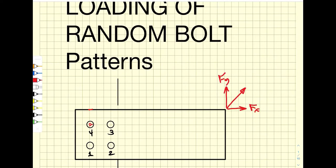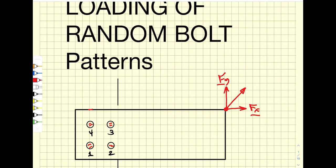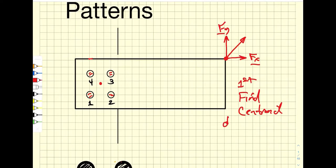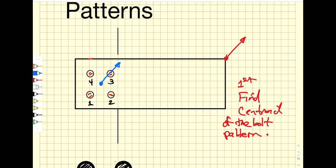If we change to a more complicated load, the direct shear in each bolt can be found by dividing Fx by 4 and Fy by 4, giving components on each bolt. But if the load is applied off-center, a moment is generated, and we have to figure out the shear forces that the bolts experience because of that moment. The first step is to find the centroid of the bolt pattern, then transfer the force to the centroid.